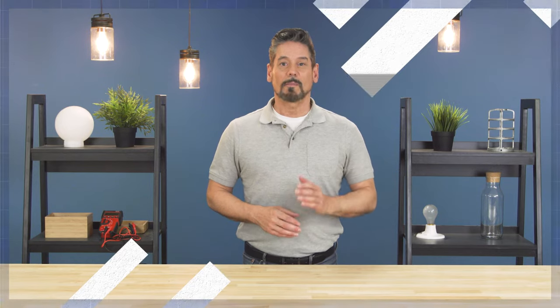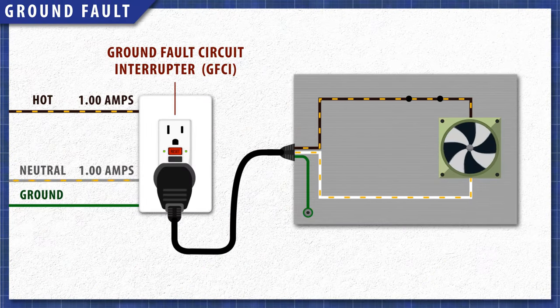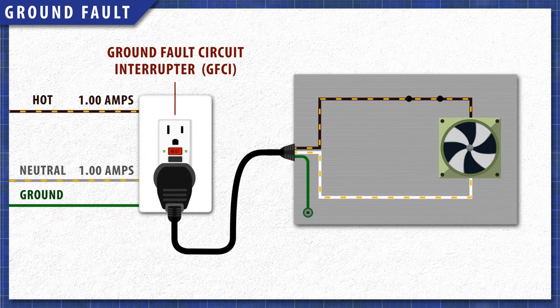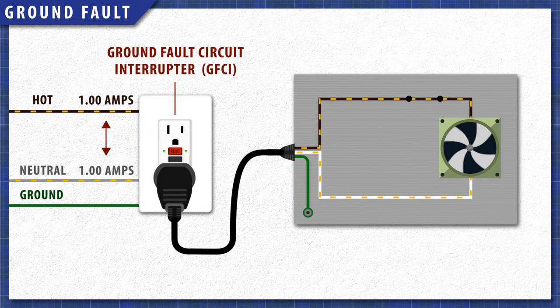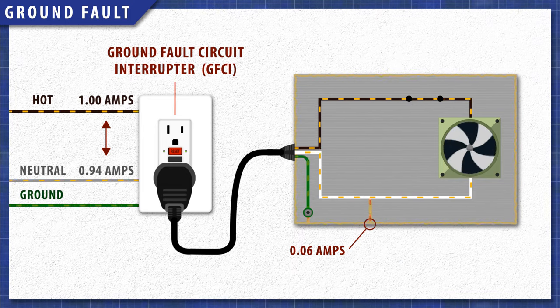To test if an appliance is shorted to ground, you can plug it into a circuit protected by a GFCI, or ground fault circuit interrupter. GFCIs monitor the current between the hot and neutral lines. If there is even a small amount of current leaking to ground, then the GFCI will trip, disconnecting power until it's reset.